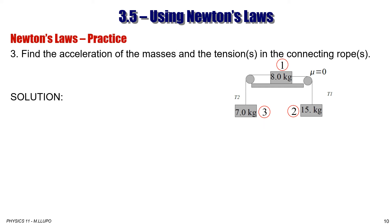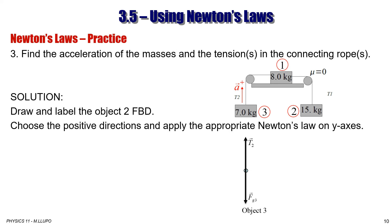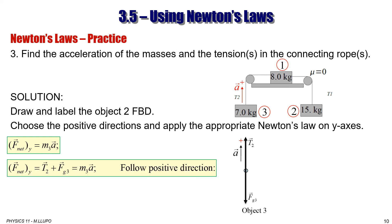For object 3, with forces Fg3 and T2, the positive direction is up and the object is accelerating, so apply the second Newton's law: Fnet equals M3a. Following the positive direction, T2 is positive and Fg3 is negative, so T2 minus Fg3 equals M3a. That is equation number 3.